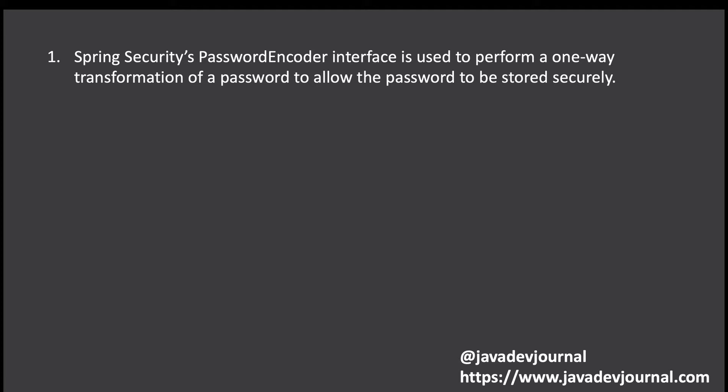One important thing to keep in mind: some algorithms are intentionally slow — for example, bcrypt is a little slow — and that depends on configurations like number of iterations and other things. This slowness is intentional. If someone is trying to steal your password or attack the system, a slow encoding mechanism makes it more difficult for the attacker, even with sophisticated hardware, because they're using programs rather than manual attempts.